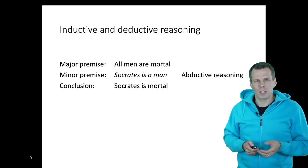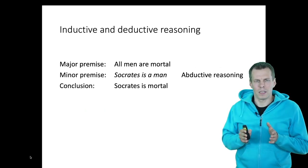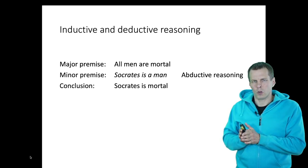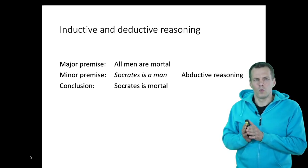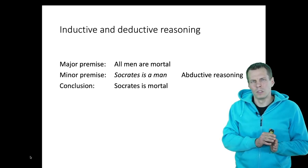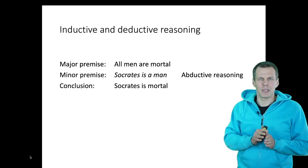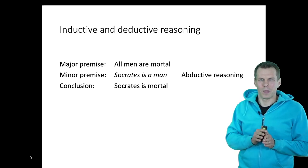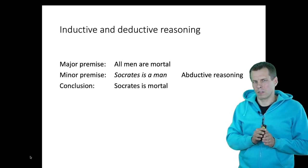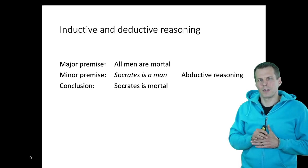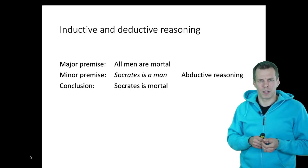Then we have abductive reasoning. The idea is that we observe that Socrates is mortal, we know that all men are mortal, and then we start thinking about what might explain that Socrates is mortal. The best explanation might be that Socrates is a man. We don't know whether that's the correct explanation, but it is a reasonable one.